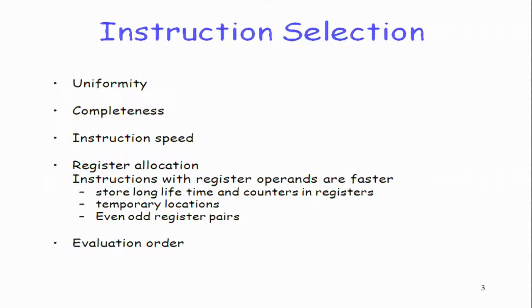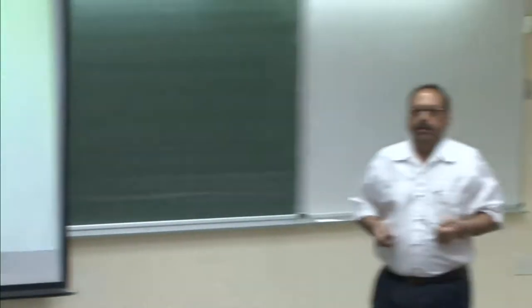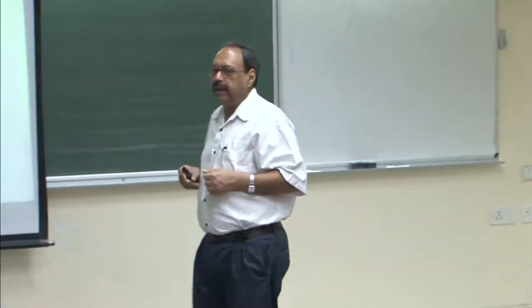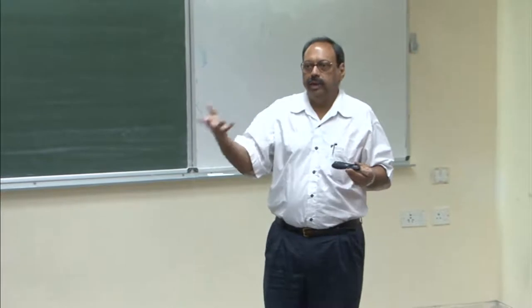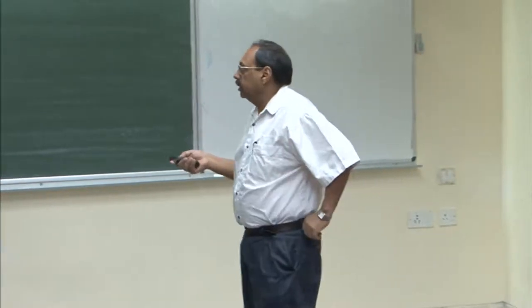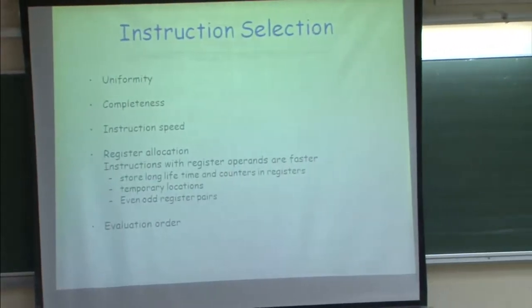Instruction speed is another issue: I can write multiple sequences of code at the target machine that do the same computation — now which one is better? Some programs will be faster, some will consume fewer memory cycles. Research also asks which is the 'green' program — one that consumes less energy. We can generate power-sensitive instructions, but we will only look at optimization with respect to resources and speed, not power.